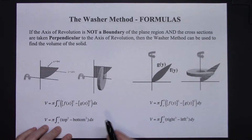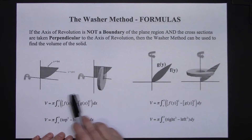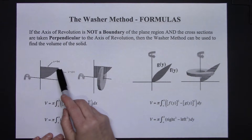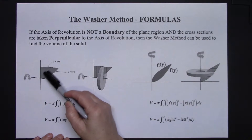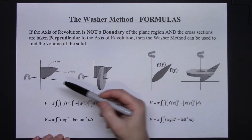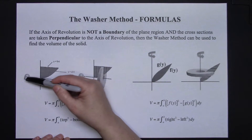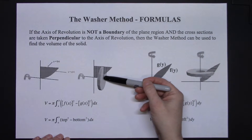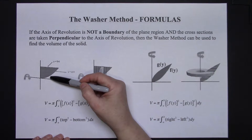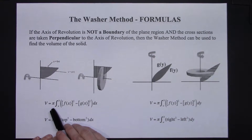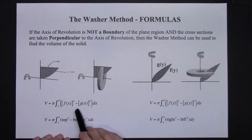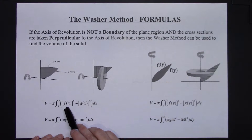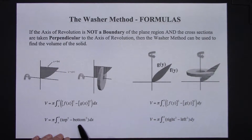Now if we take a look at a couple different scenarios and what the formulas would look like — in this first example on the left-hand side, I've got two curves, an f(x) and a g(x). In between the two curves is my area that I'm going to be revolving, making my representative rectangle perpendicular to my axis of revolution. Generically the formula can be written pi times the integral from a to b of f(x) squared minus g(x) squared dx. That's assuming the first curve is f(x) and the bottom curve is g(x), so generically I tell my students: top curve squared minus bottom curve squared.